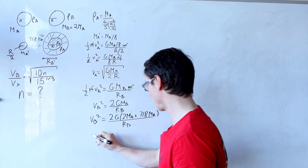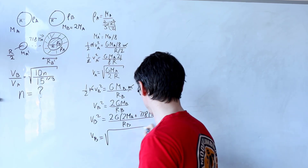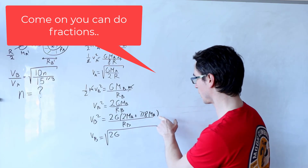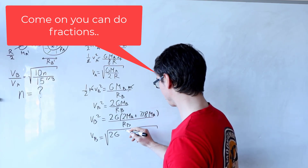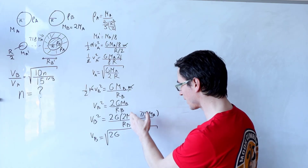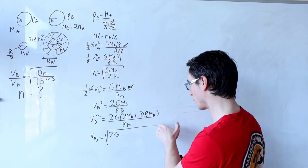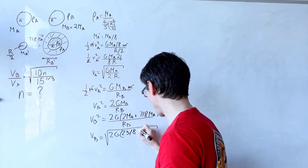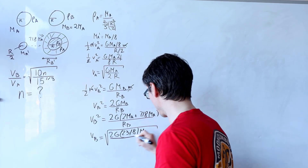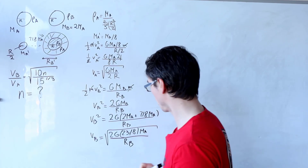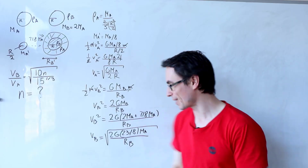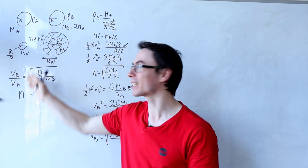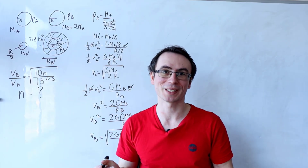Tidying up, vb equals the square root of 2G times (2·ma + 7/8·ma) divided by rb. Converting: 2·ma is 16/8·ma, so 16/8 + 7/8 gives 23/8·ma. So vb equals the square root of 2G times 23/8·ma over rb. Now I need to figure out the radius of the new star rb in order to compute this ratio and find n.